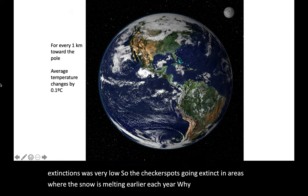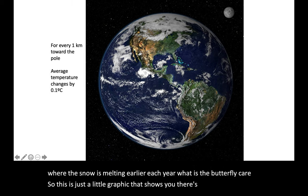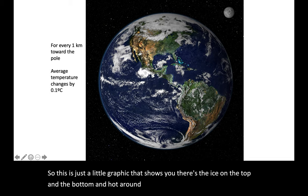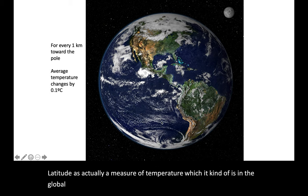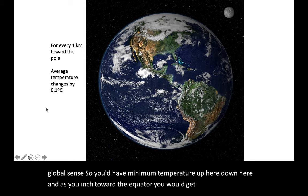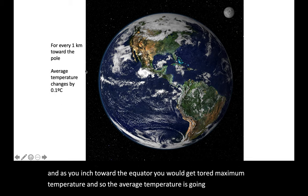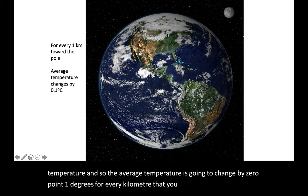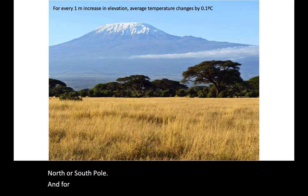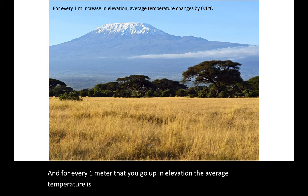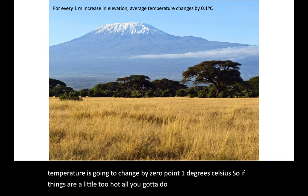Latitude is actually a measure of temperature in a global sense — minimum temperature up at the poles, maximum temperature toward the equator. The average temperature is going to change by 0.1 degrees for every kilometer that you march toward the north or south pole. And for every one meter that you go up in elevation, the average temperature is going to change by 0.1 degrees Celsius. So if things are a little hot, all you've got to do is find a mountain and go up it.